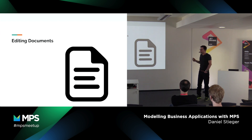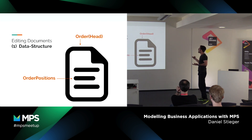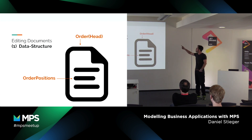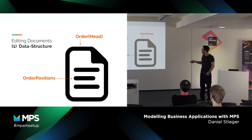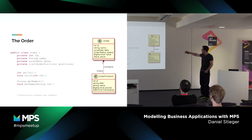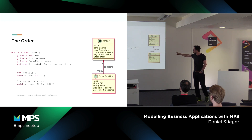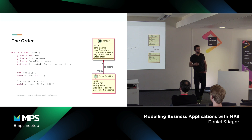Editing documents comes with modeling user interfaces, modeling data structures, and modeling business logic. First things first: data structure. Not too complicated in our example — it's just the order head, and there are the order positions. If we just have a look at how that would look in Java: order has some simple properties, and order position is modeled as a collection right inside the order.